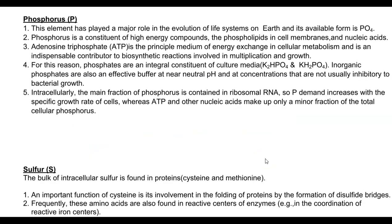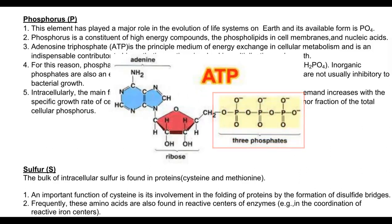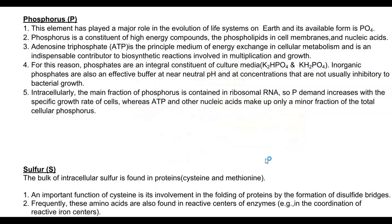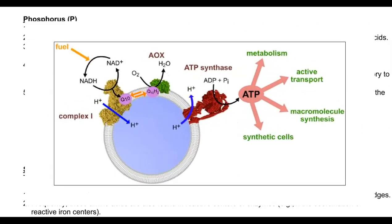The next important nutrient is phosphorus, which has played a major role in the evolution of life on Earth. It is available commonly in phosphate form and is an important component of high-energy compounds, mainly ATP. Phosphorus is also present in phospholipids located in the cell membrane and in nucleic acids. ATP is the principal medium of energy exchange in cellular metabolism, making phosphorus an indispensable component in the biosynthetic reactions involved in growth, multiplication, and metabolism.